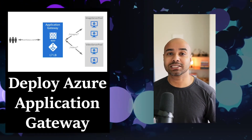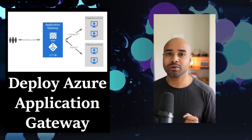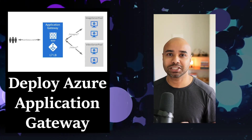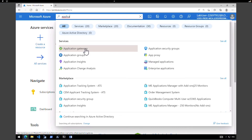Hello everyone. In this lab exercise, we are going to look into Azure Application Gateway. We're going to create a couple of virtual machines, add them to the backend pool, and test the Azure Application Gateway. In this exercise, we are going to use the Azure Portal to create an Application Gateway and then test it to make sure it works correctly. The Application Gateway directs application web traffic to a specific resource in a backend pool. We are going to assign listeners to the port, create some rules, and add resources to the backend pool.